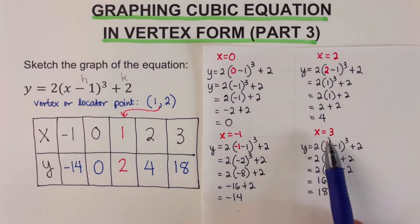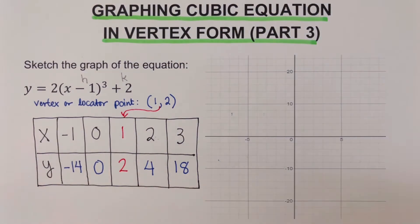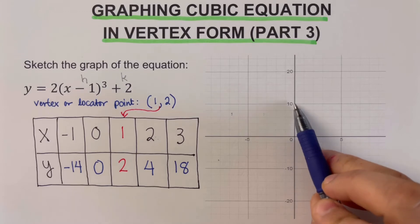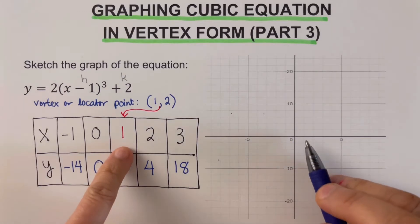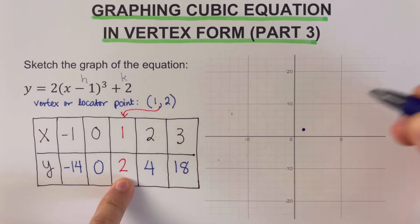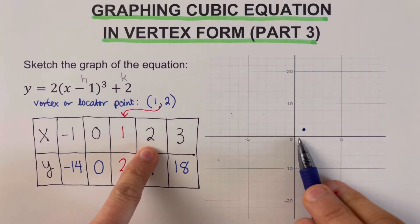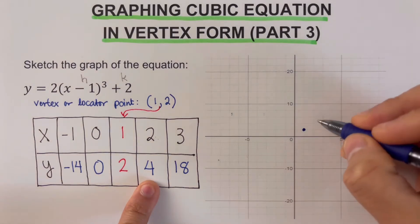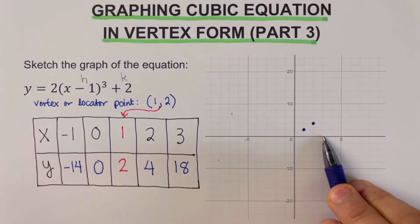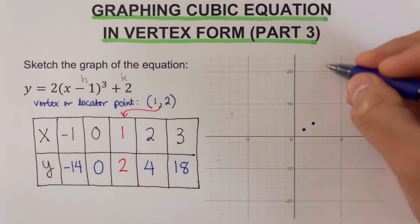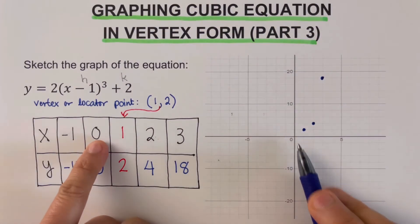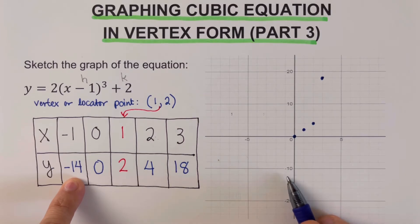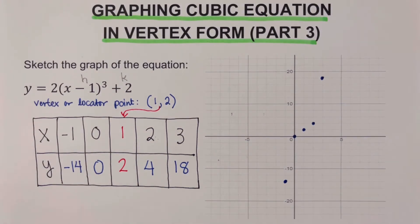Our next step is to sketch the graph. We start with the vertex at (1, 2). Note the y-axis counts by two and the x-axis by one. The vertex sits at x equals 1, y equals 2. At x equals 2, y equals 4. At x equals 3, y equals 18, which is up at 18. At x equals 0, y equals 0. At x equals negative one, y equals negative 14, sitting at negative 14 on the graph. We then sketch the cubic curve through these points.